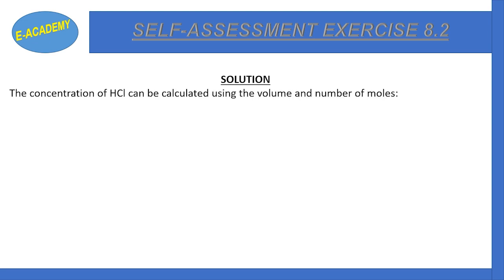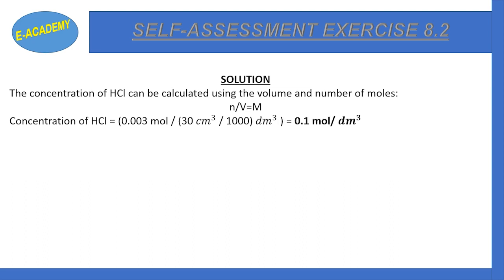The concentration of HCl can now be calculated using moles divided by volume equals molarity. We have 0.003 moles divided by 30 cm³ (converted to dm³ by dividing by 1,000). This gives us a molarity of 0.1 moles per dm³.